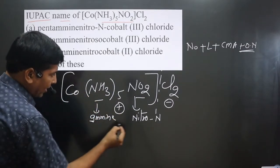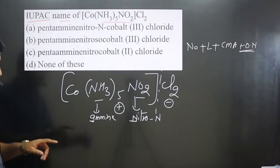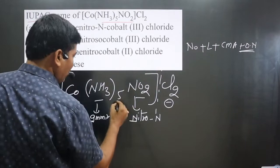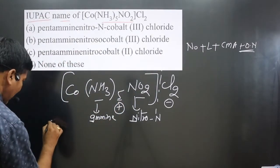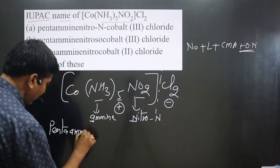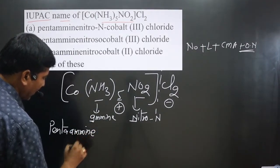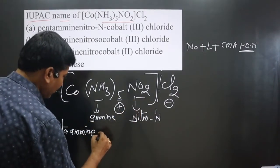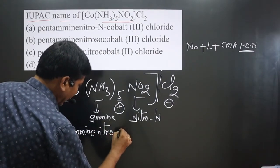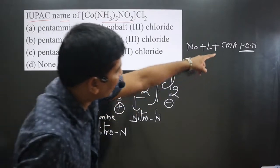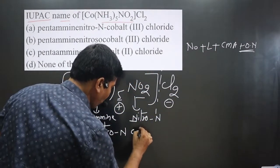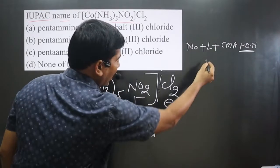Starting from A for amine and N for nitro, alphabetically we write amine first. The number of amine ligands is five, so we write 'pentaamine'. Then we have 'nitro-N'. Then the central metal atom — cobalt.